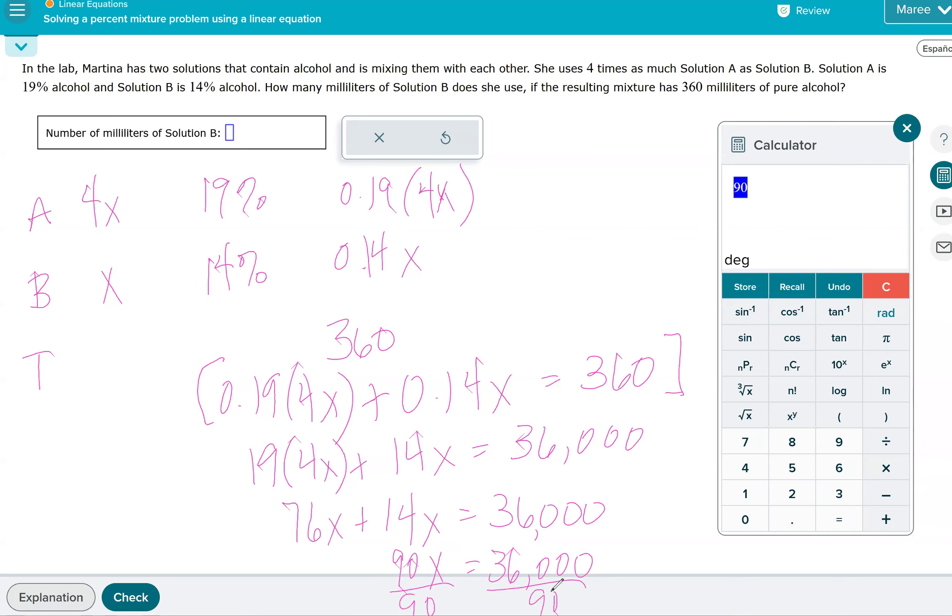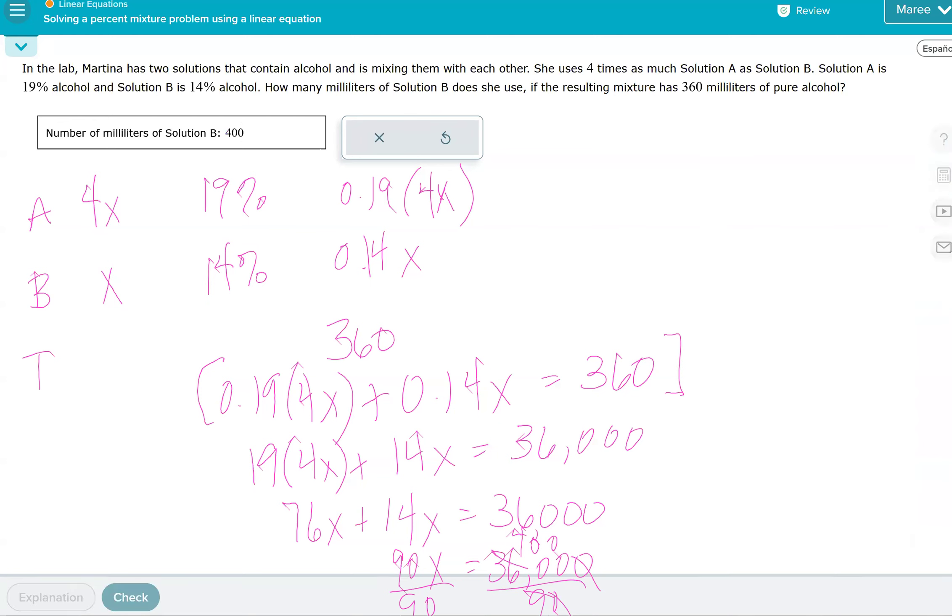What I like to do is cancel one zero. 9 goes into 36 four times, so it'll be 400. So they used 400 milliliters of solution.